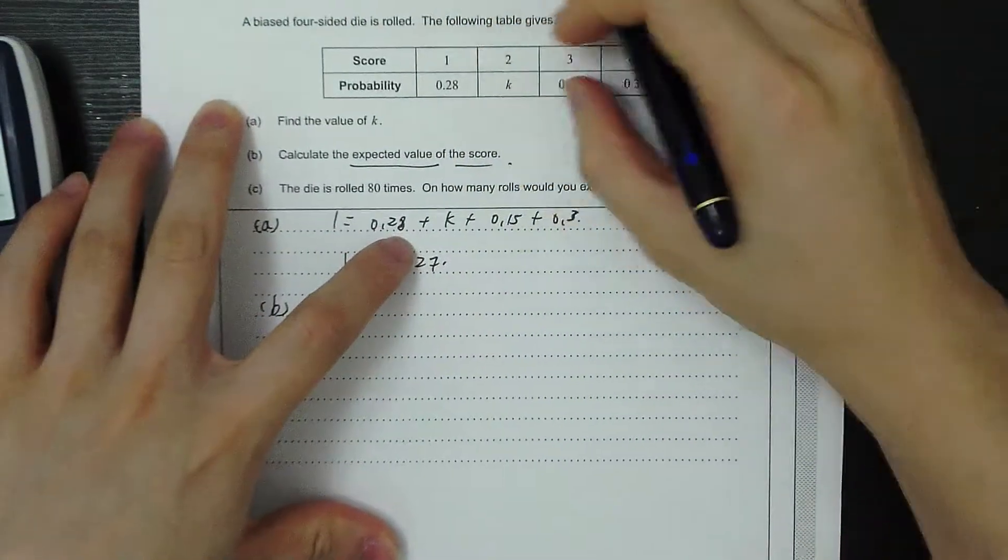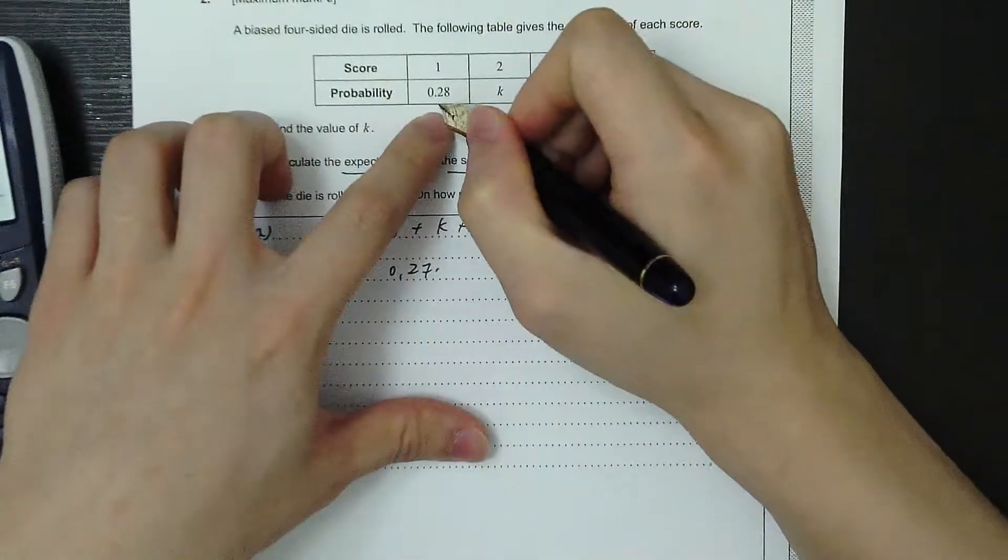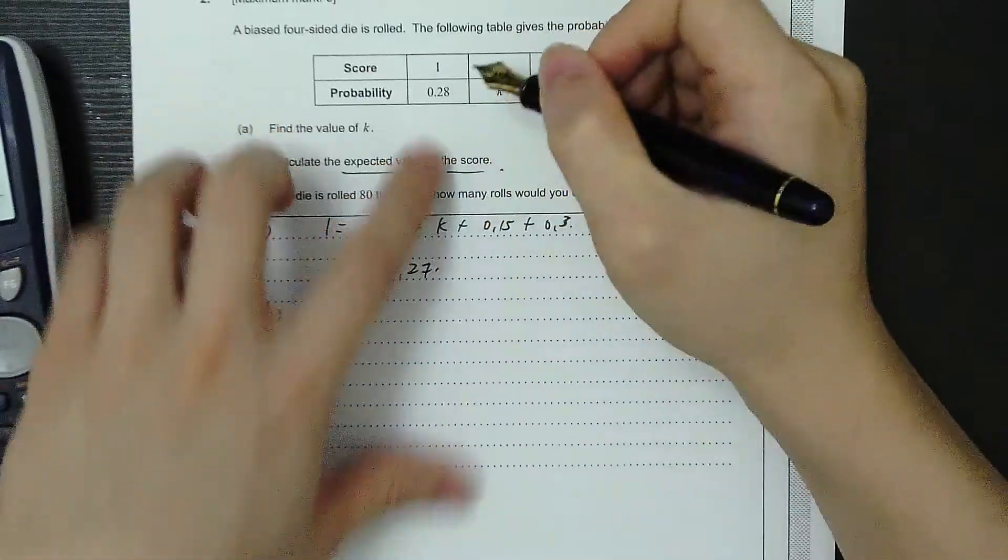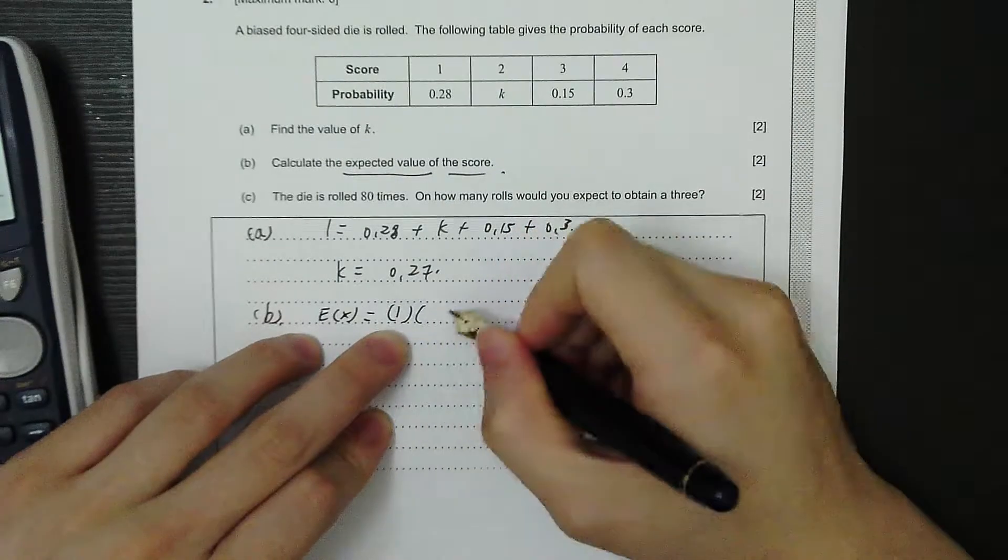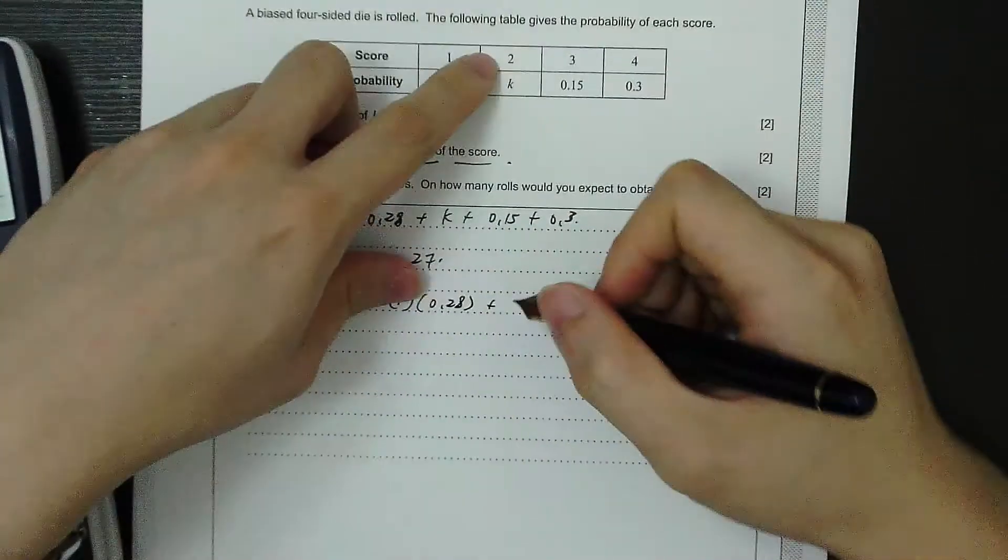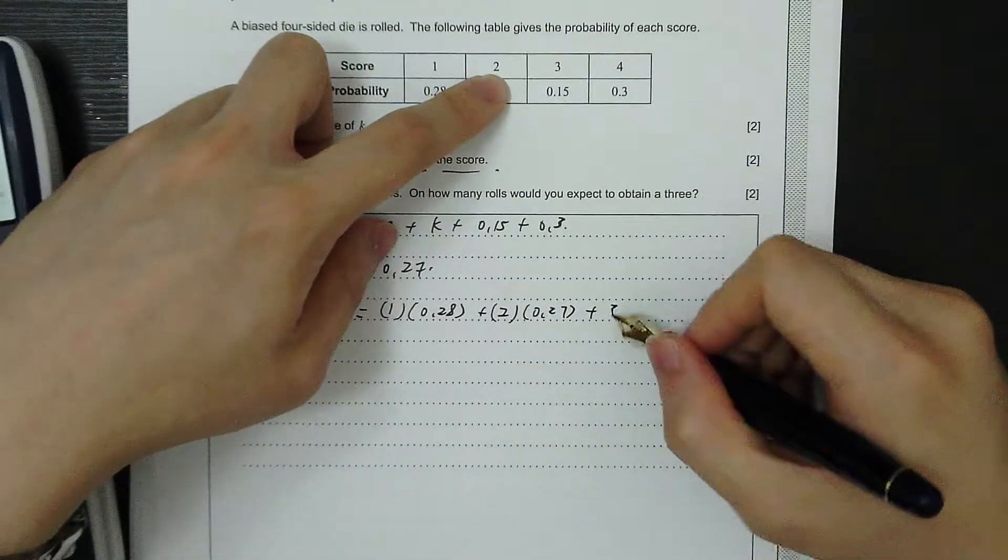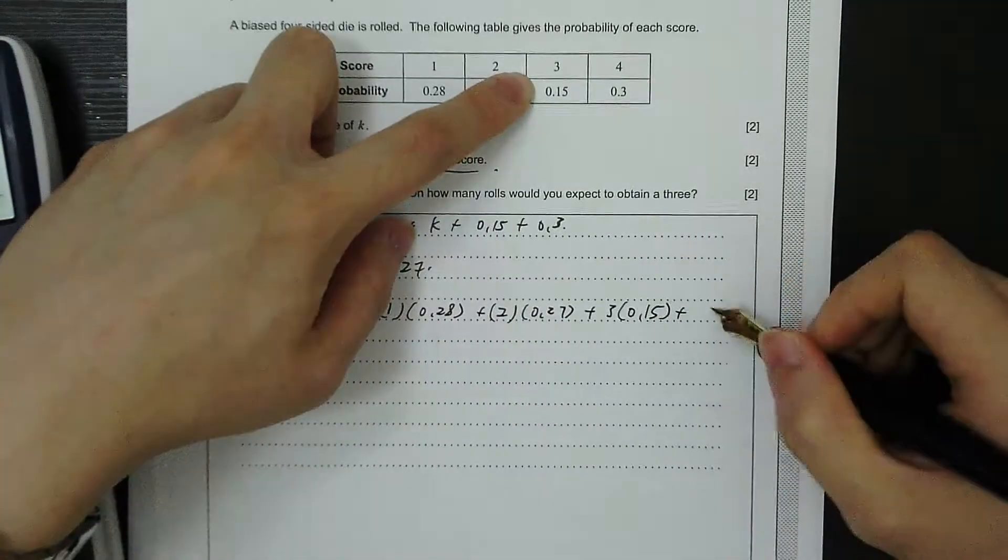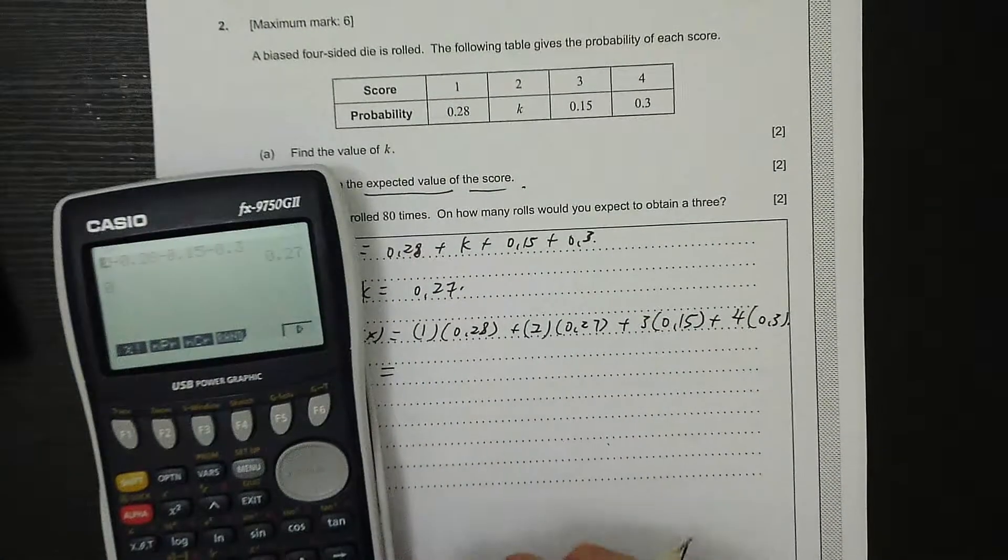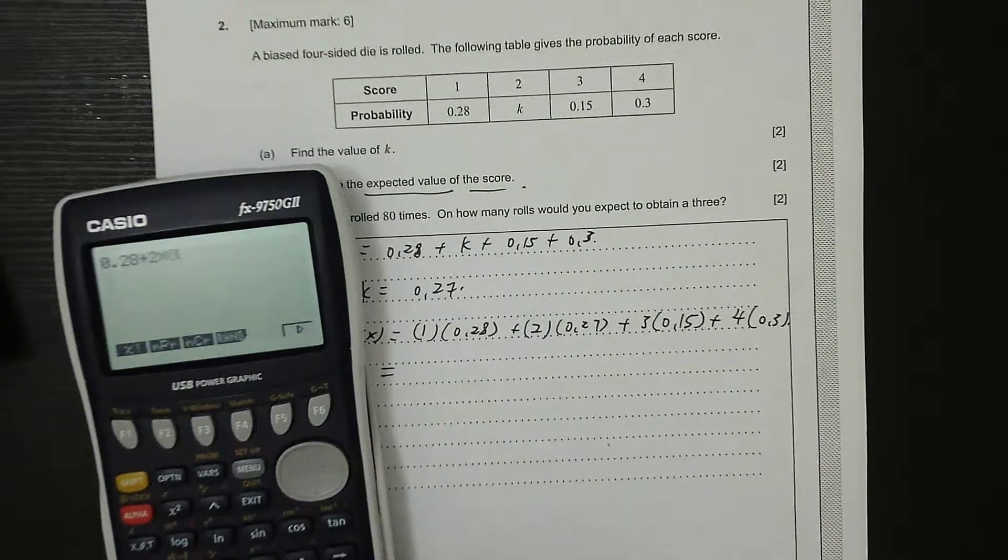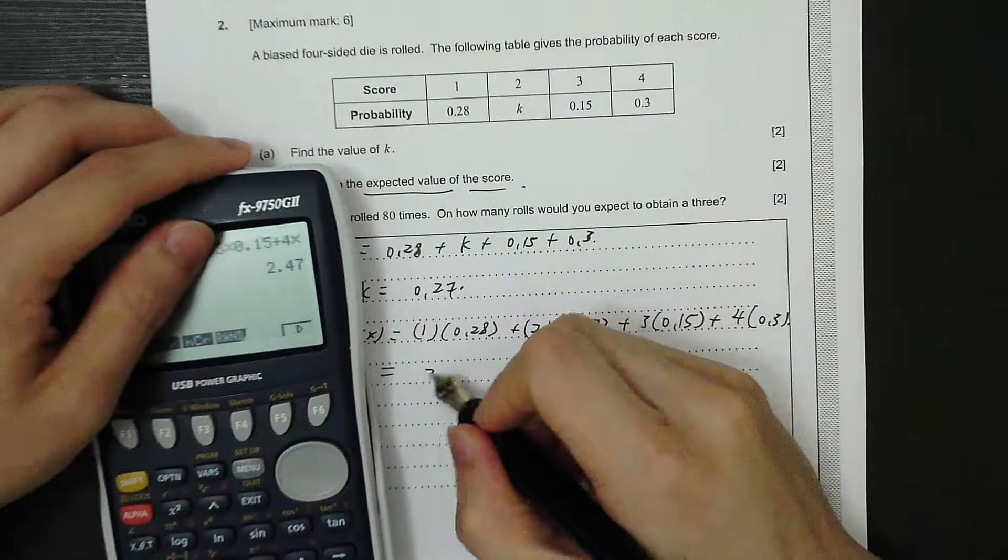There are 4 scores here. X is 1 and the probability for X equals 1 is 0.28. So the expected value is 1 times 0.28 plus 2 times K. K is 0.27 plus 3 times 0.15 plus 4 times 0.3. This gives 2.47.